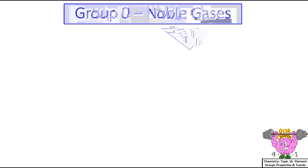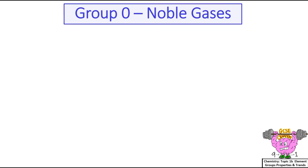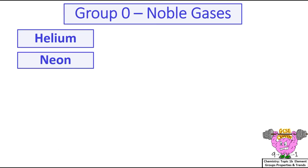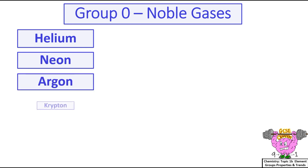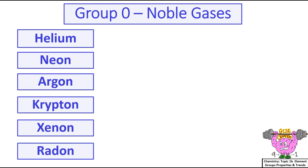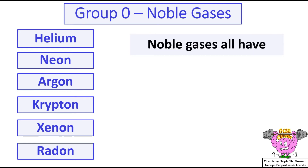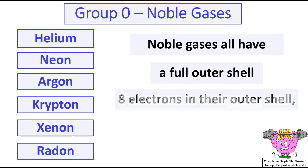Group 0 noble gases include helium, neon, argon, krypton, xenon, and radon. Noble gases all have a full outer shell — they all have eight electrons in their outer shell, except helium, which has two.